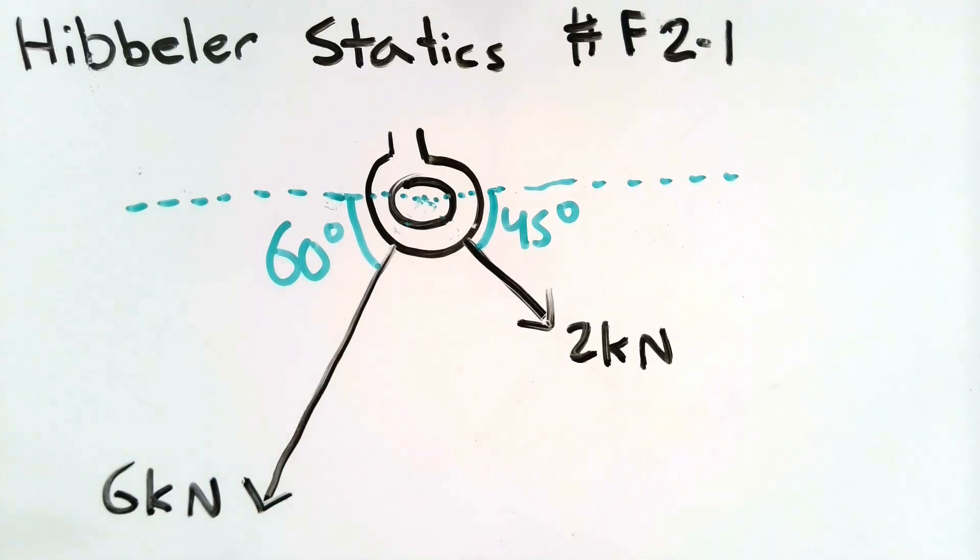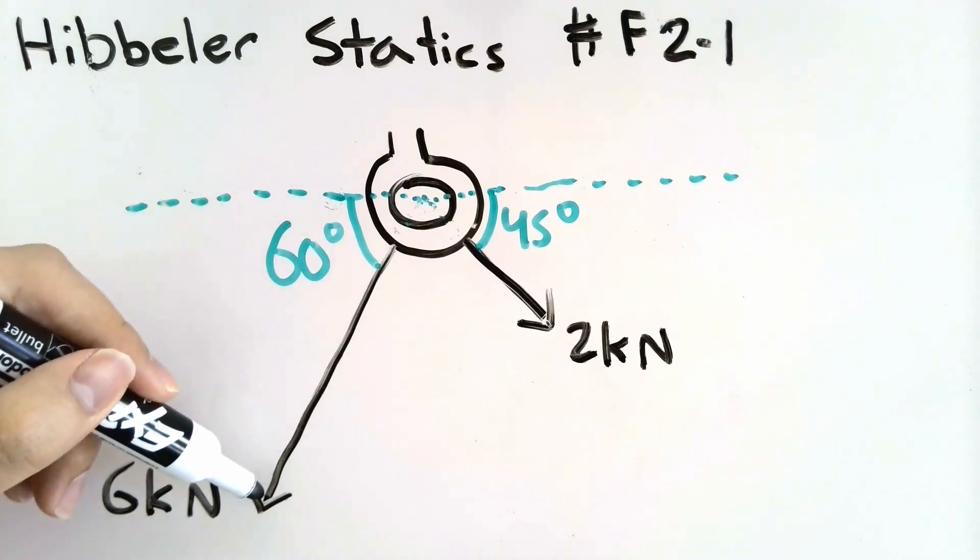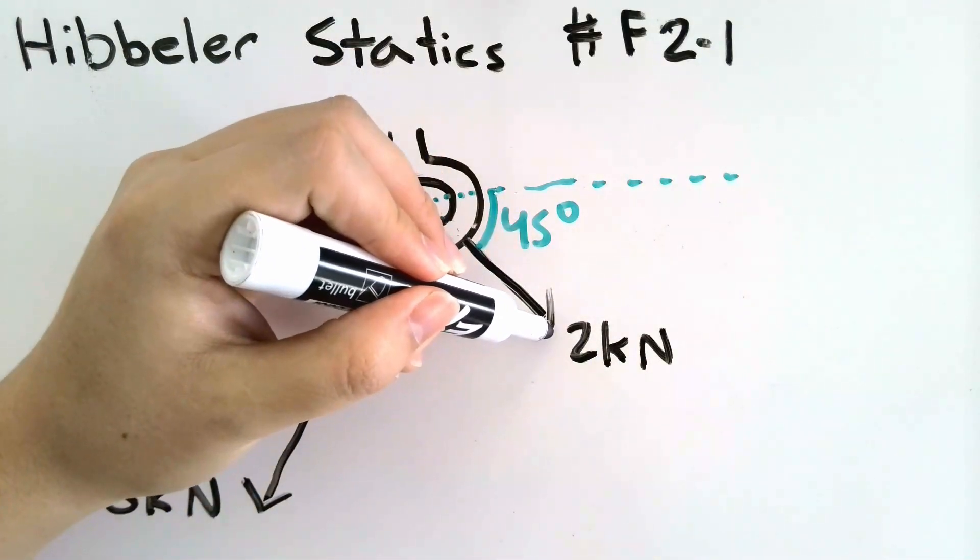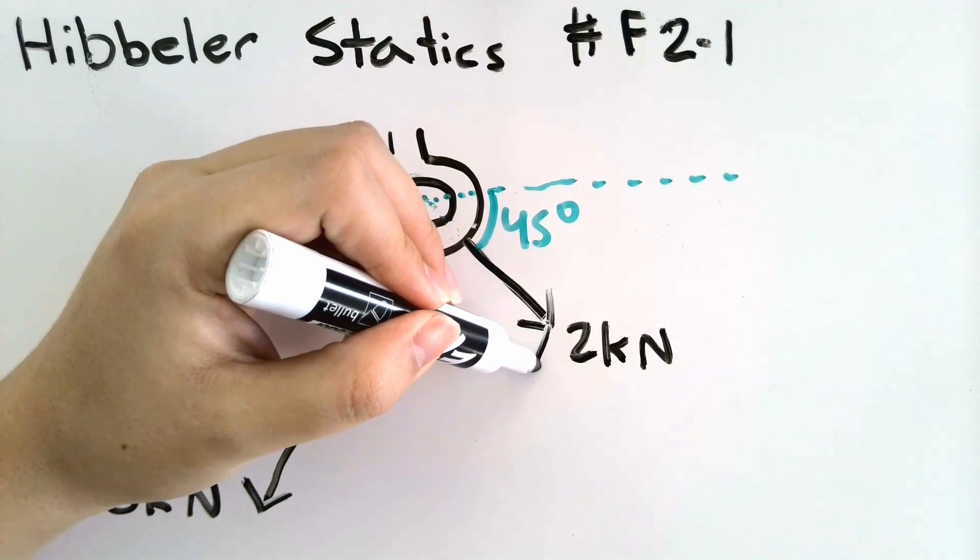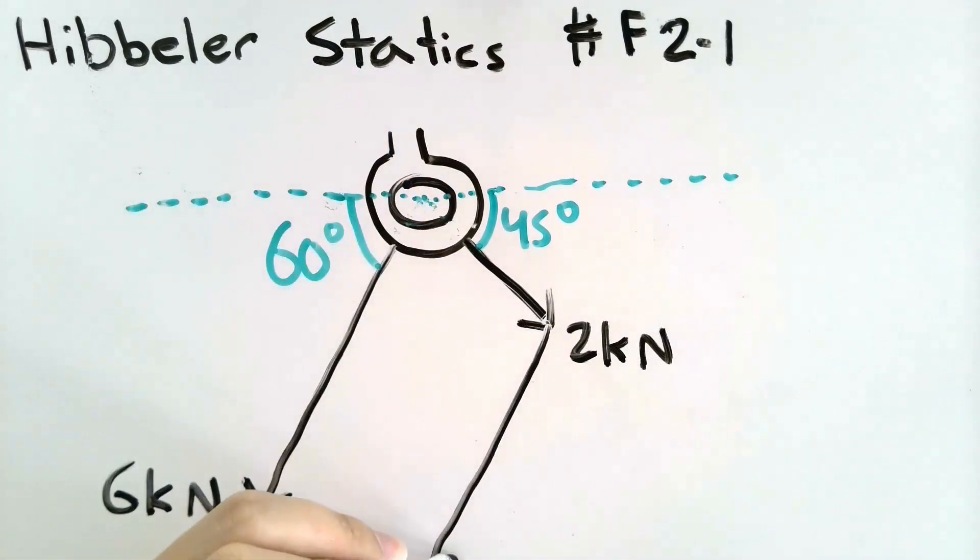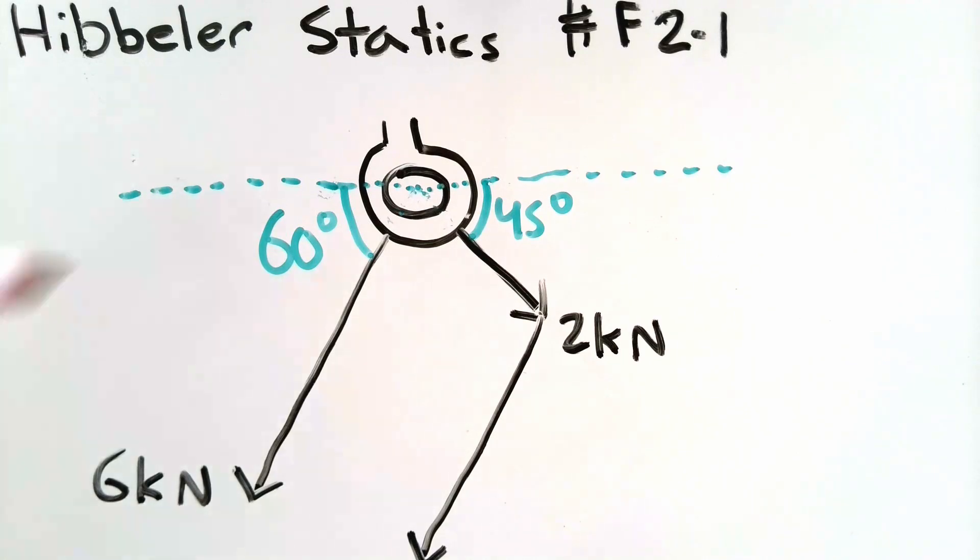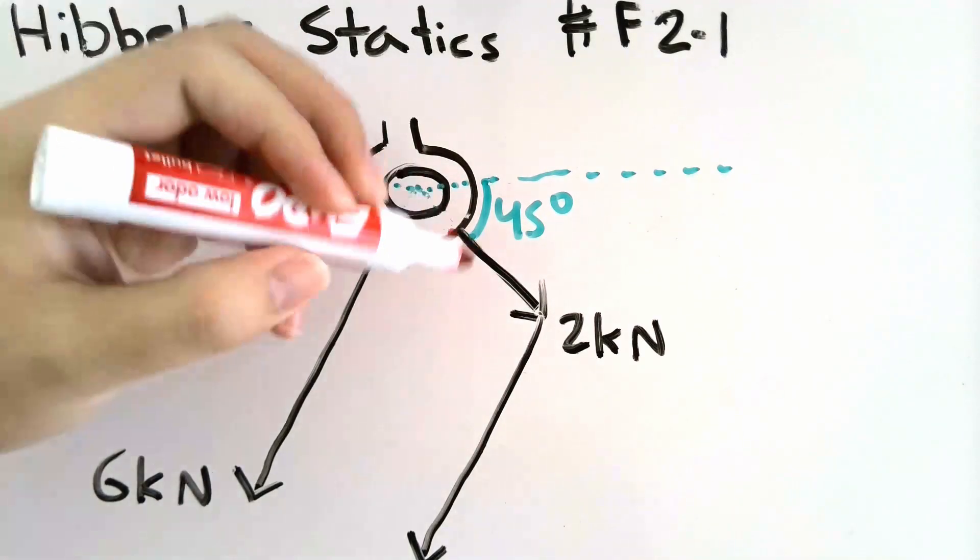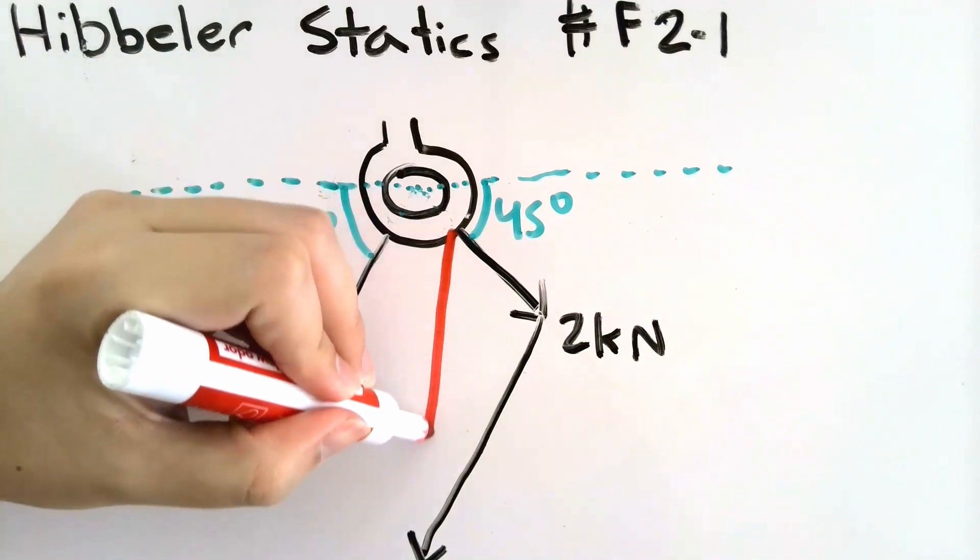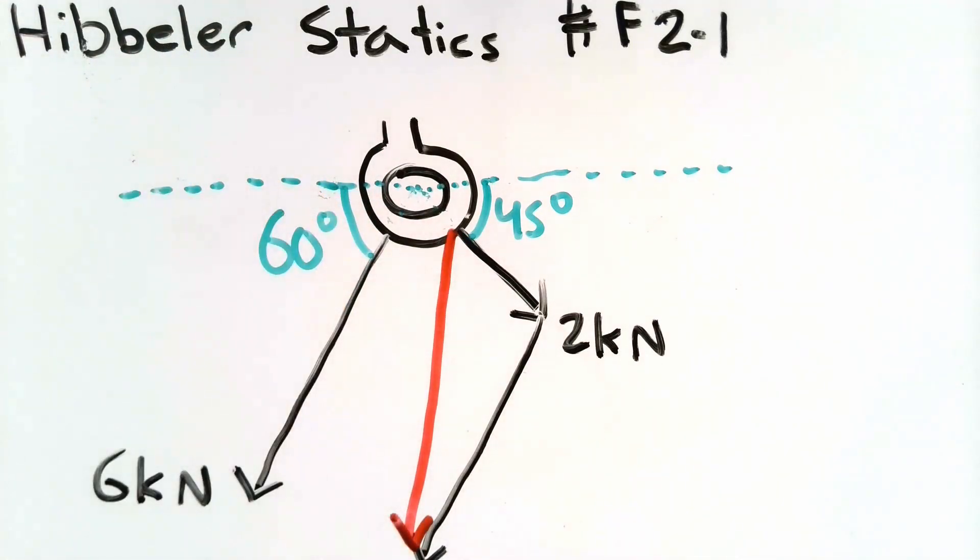If we add this 6 kilonewton vector we just take this entire vector and start at the end of the 2 kilonewton vector. This will leave us with something like what's in the figure. Now this is not the resultant force for these vectors however we can find the resultant force by then connecting the start of the first vector with the end of the second vector.